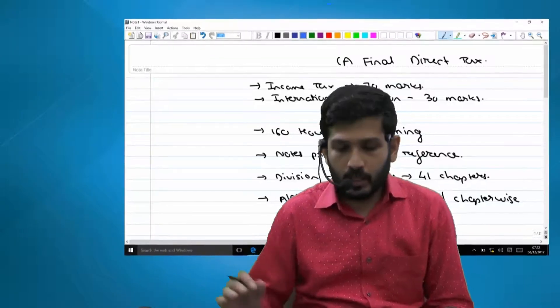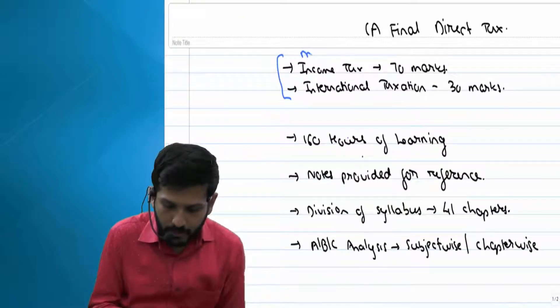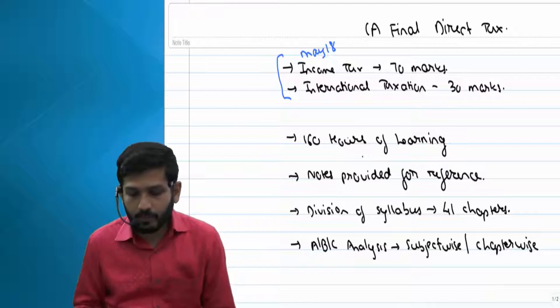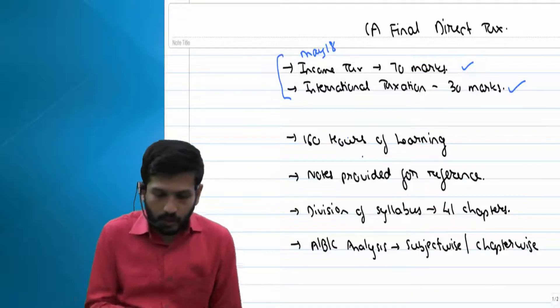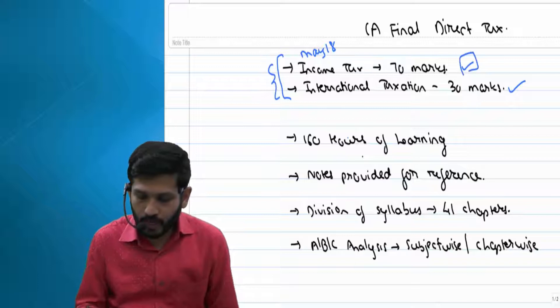As per your new curriculum which will be applicable for May 18, income tax is going to be for roughly 70 marks and international taxation will be for 30 marks. That is what they have prescribed at ICAI. Now this division, I think very specifically they will ask 30 marks on your international taxation and rest will come in your normal tax law.